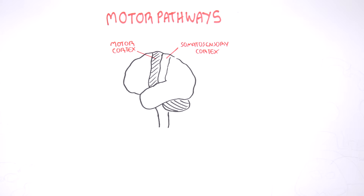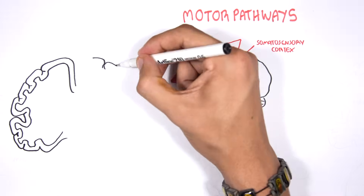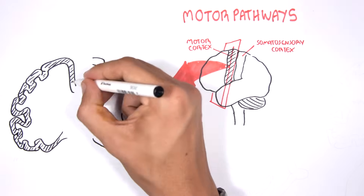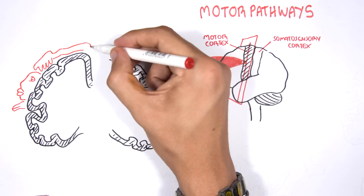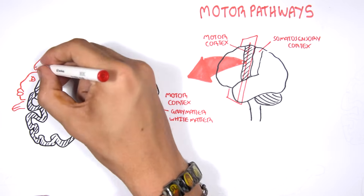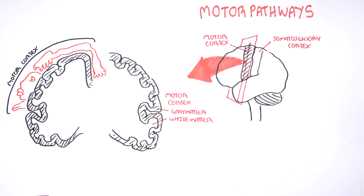Let us take a cross-section of the motor cortex. It is made up of the outer gray matter, where synapses are, and then there is the inner white matter, which contains myelinated axons. On each side of the cortex, right and left, there are areas that represent a particular region in our body — such as the hands, the face, the legs. Signals will arise from one of these areas and travel to that particular area of the body to perform that movement or action.